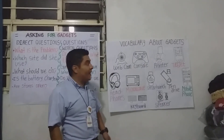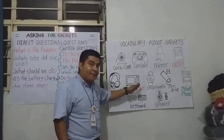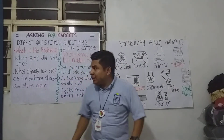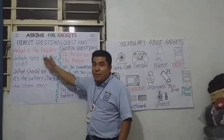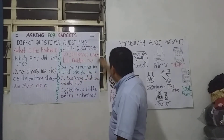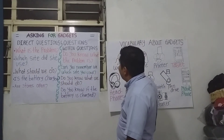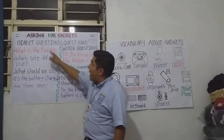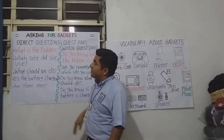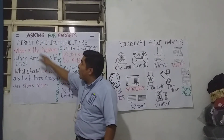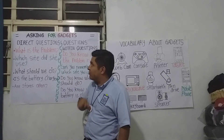You identified that vocabulary in the platform. In this class, we are going to make questions referring to the gadgets — asking for gadgets. We are going to make direct questions. Check the structure.